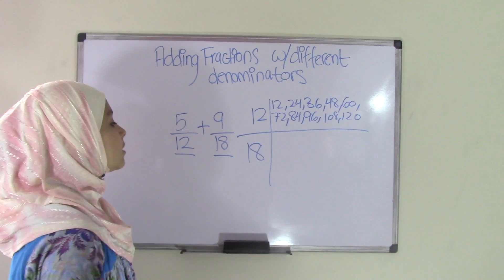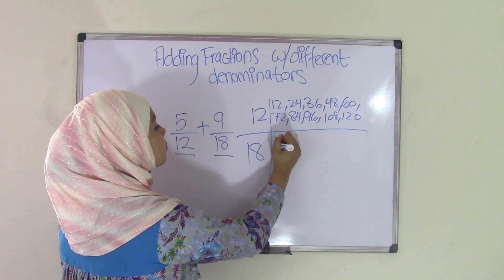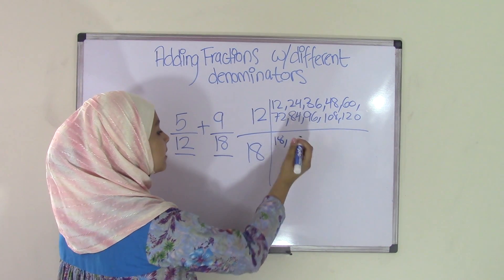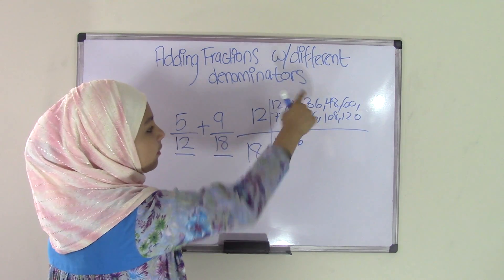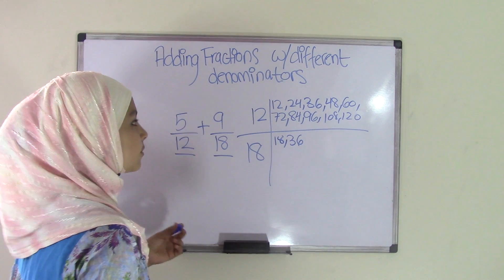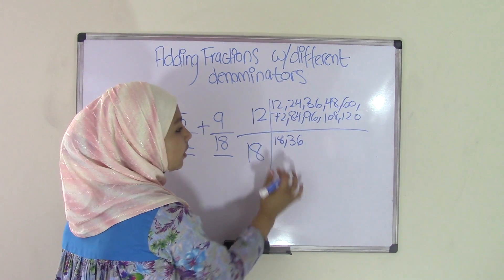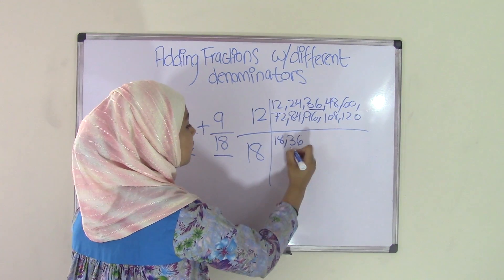So starting with 18, 18 times 1 is 18, 18 times 2 is 36. Oh, look, 36 and 36, those are common multiples. So I don't need to go all the way until 10. So 36 and 36.